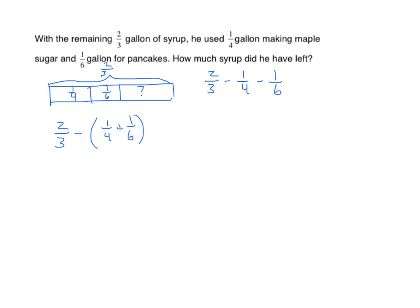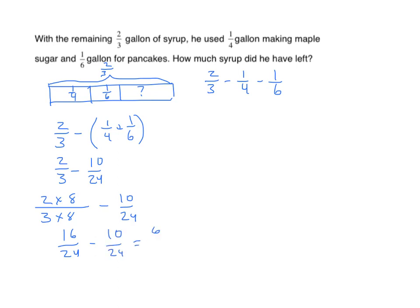Let's start with the expression in parentheses. I'm going to copy my two-thirds minus the sum of one-fourth and one-sixth. I find the sum inside the parentheses is ten twenty-fourths. We can now find our common denominator — two-thirds can be changed to twenty-fourths by multiplying both numerator and denominator by eight. I end up with sixteen twenty-fourths minus ten twenty-fourths equals six twenty-fourths.